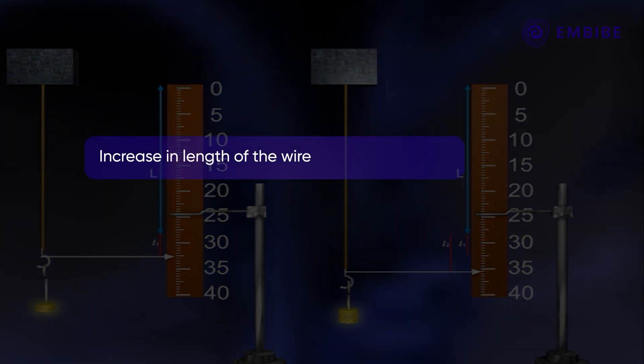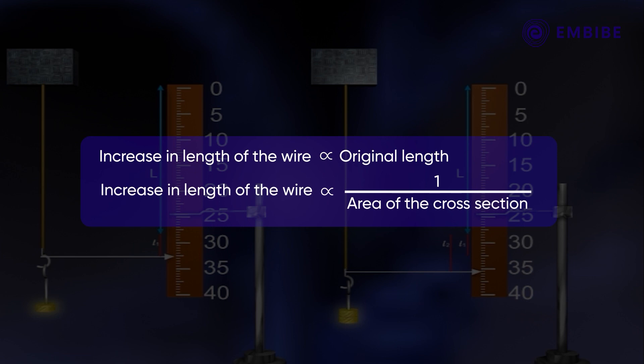Such an experiment shows that for a given weight, the increase in the length of a wire is directly proportional to its length and inversely proportional to the area of its cross-section.